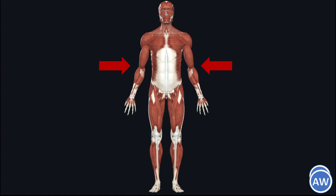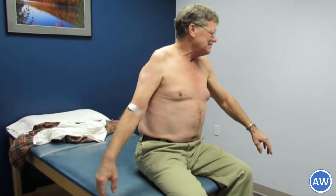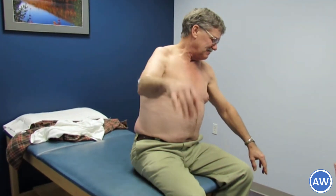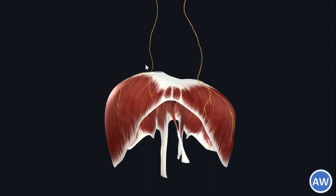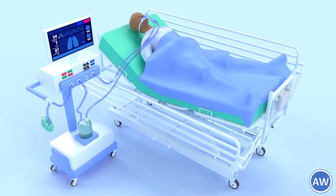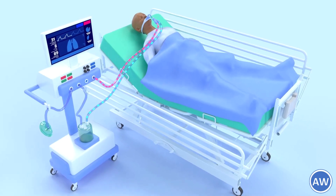Weakness in the upper limb muscles appears earlier and is more severe than those of the lower limb muscles. The first symptom is usually difficulty in lifting the arm over the head, resulting in difficulty in activities like combing the hair or scratching the back of the head. In very severe cases, the intercostal muscles and the diaphragm are affected, leading to difficulty in breathing, and patients may require mechanical ventilation.